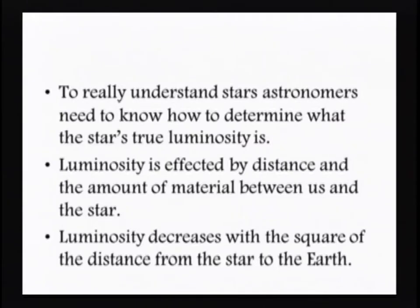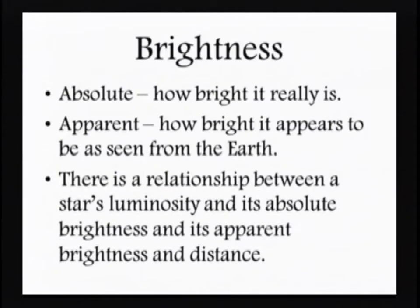Luminosity is affected by distance, because of the material the light is going through. Luminosity decreases with the square of the distance from the star to Earth. If I move the star twice as far, luminosity drops by four times. Bring it twice as close, it goes up four times. Three times out means luminosity changes by about nine.